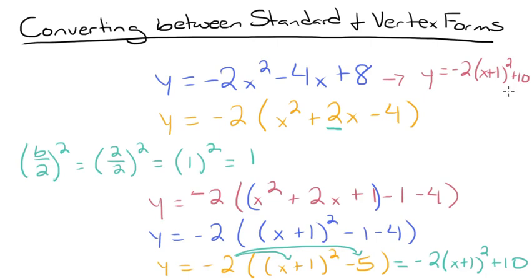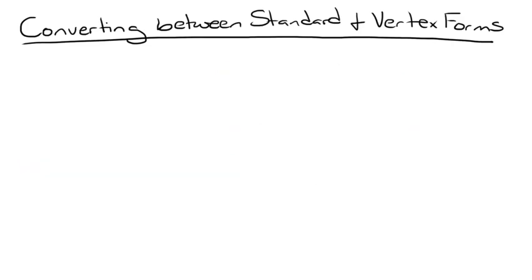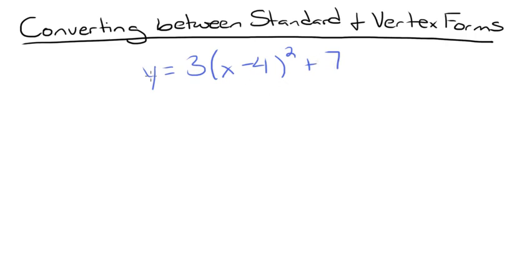Now let's move on to converting a vertex form equation to standard form. This conversion process is much simpler. We'll convert the equation y equals 3 times x minus 4 squared plus 7 to standard form. The first thing we need to do is expand the squared term, so we'll have y equals 3 times x minus 4 times x minus 4 plus 7.